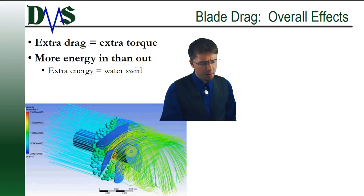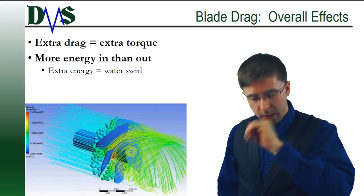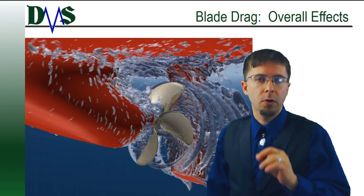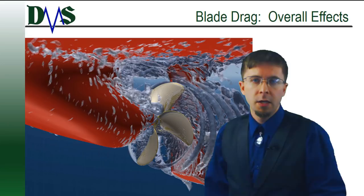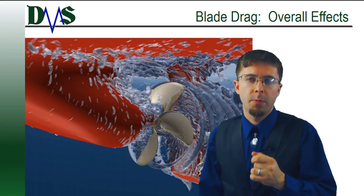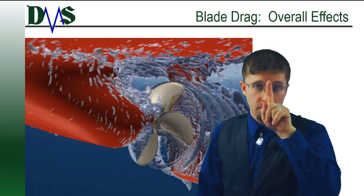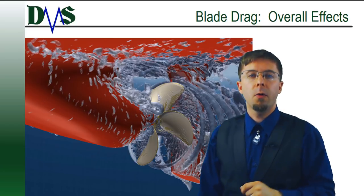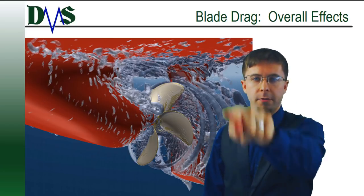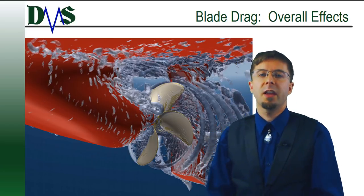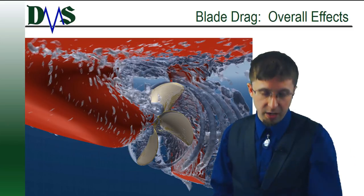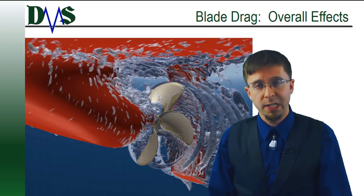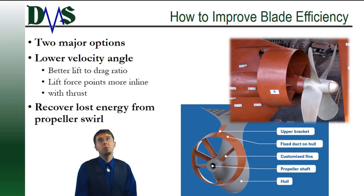Wait a minute. If we put more energy in than we get out, where did the rest go? It went into the swirl motion of the water. When the water first enters the propeller, it moves straight. But after the propeller, that water has a strong swirling pattern. This swirl does absolutely nothing to help us. It's just wasted energy. Doom and gloom. It's all bad news.